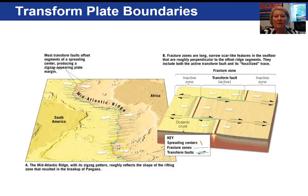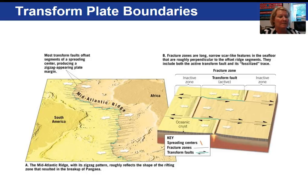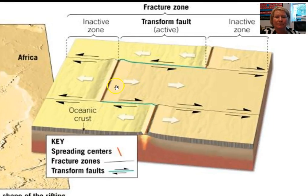This is a picture of the Mid-Atlantic Ridge winding through the Atlantic Ocean — that's your divergent plate boundary. If you see these blue lines, those are the transform faults that offset the spreading center, and this produces a zigzag appearance. Here is a close-up showing the ridge-ridge segments and the transform that's offsetting the mid-ocean ridges.